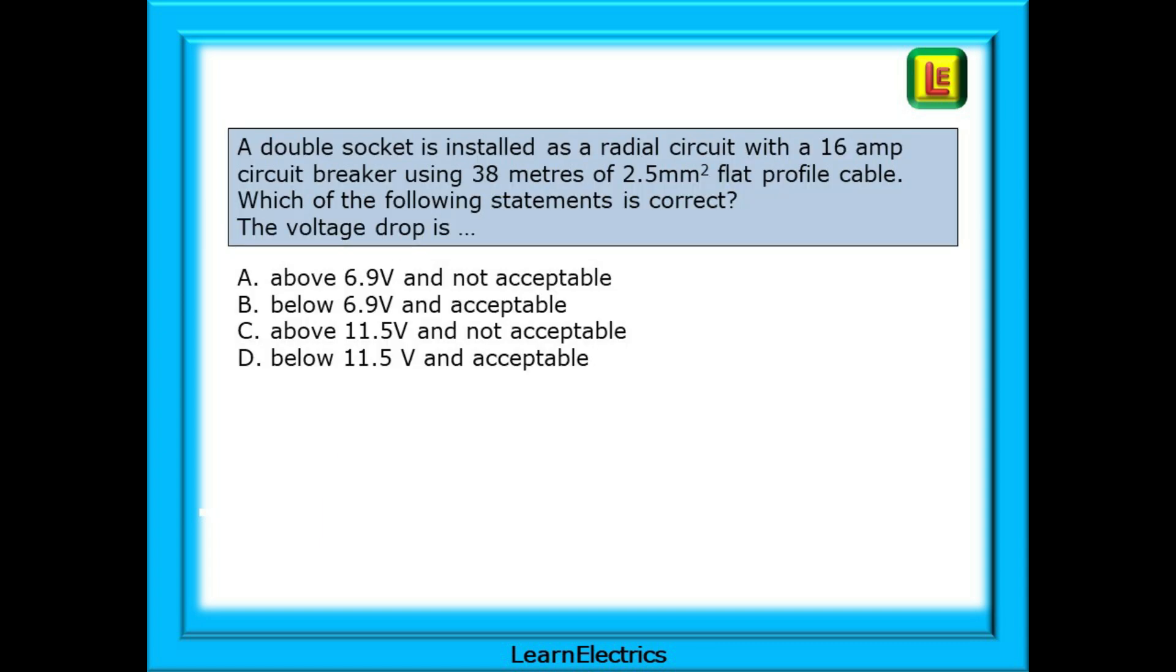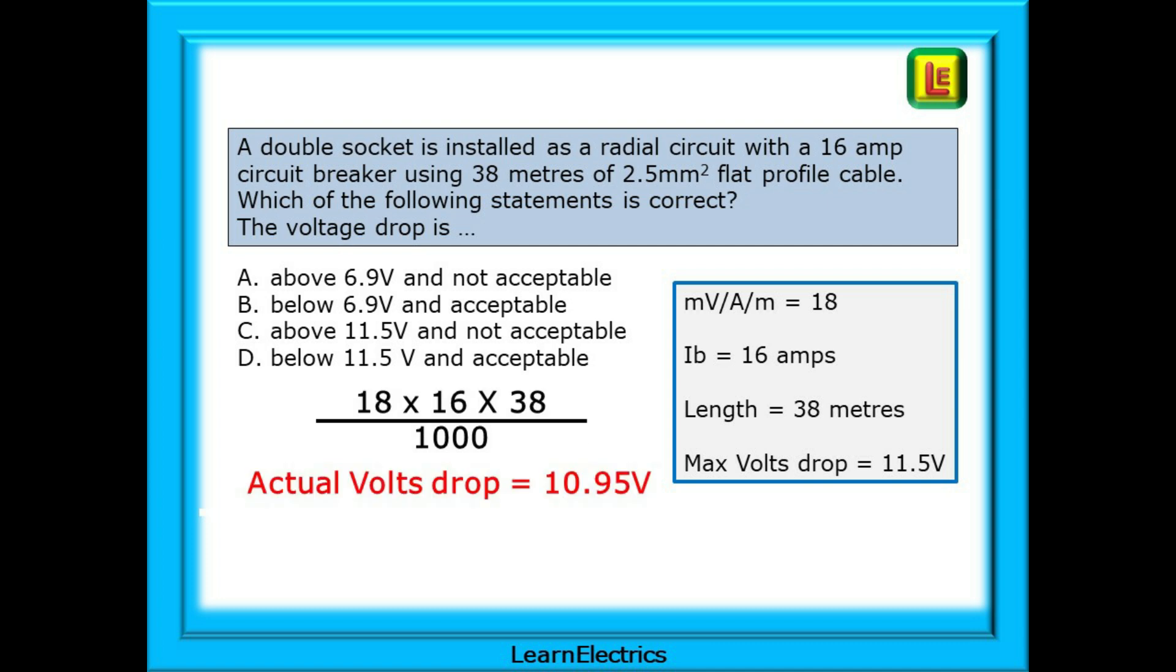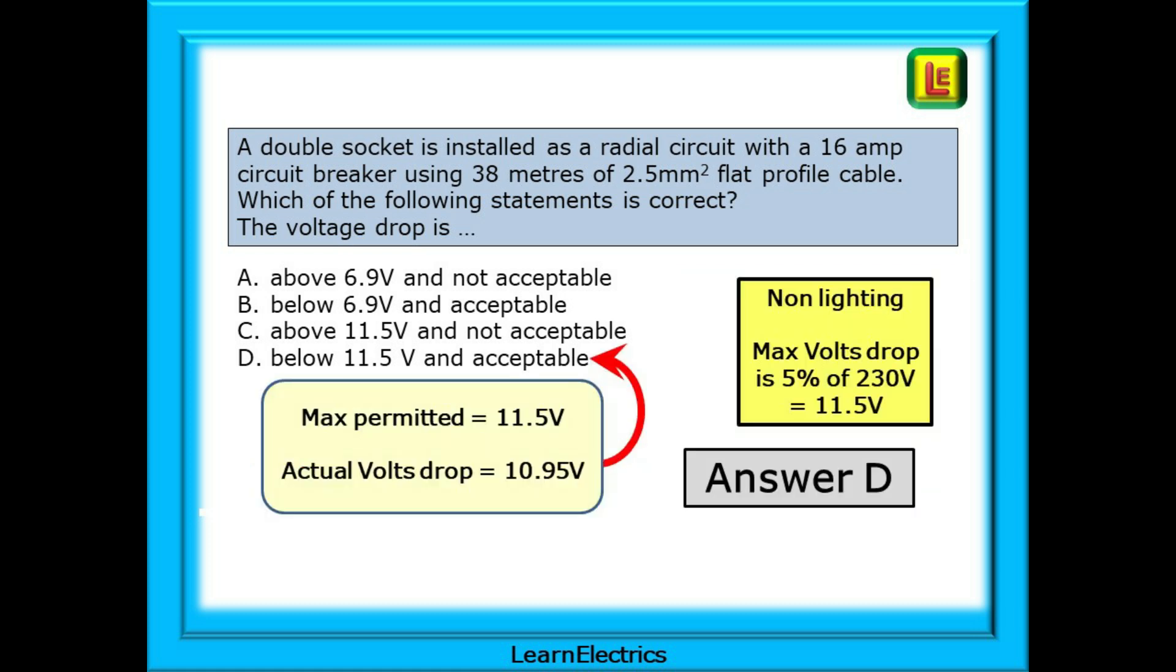Question 3 now. A double socket is installed as a radial circuit with a 16 amp circuit breaker using 38 metres of 2.5 square millimetre flat profile cable. Which of the following statements is correct? And the question asks, the voltage drop is what? And there are 4 possible answers. Only one is most appropriate. Pause the video and attempt the question yourself before seeing the answer. Complete the data box with the numbers you need from the question. Enter the numbers into the equation. Do the calculation and out should come the voltage drop 10.95 volts. Now decide if 10.95 volts is an acceptable voltage drop for a non-lighting circuit and choose your answer. You should choose answer D. The voltage drop is below 11.5 volts and is acceptable.